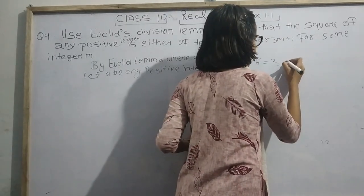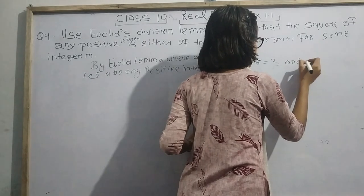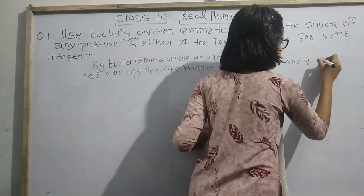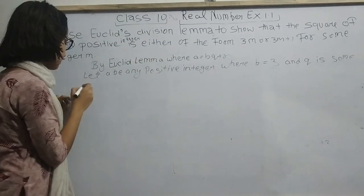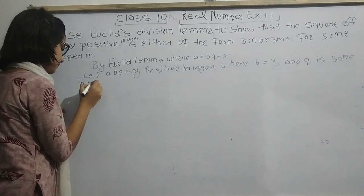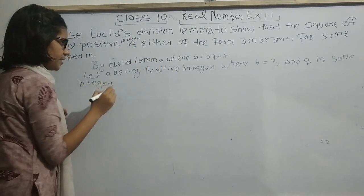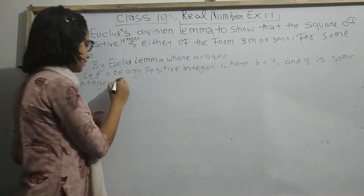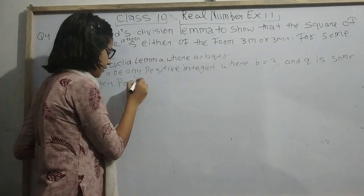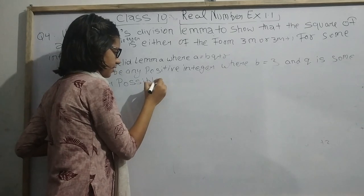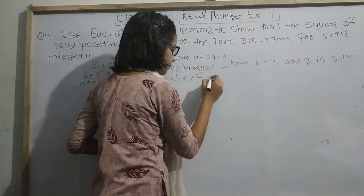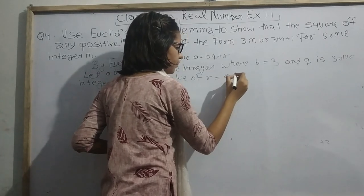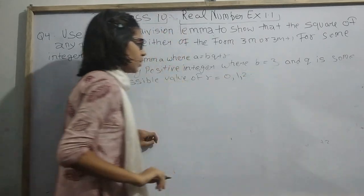Q is some integer, and possible values of R are 0, 1, and 2.